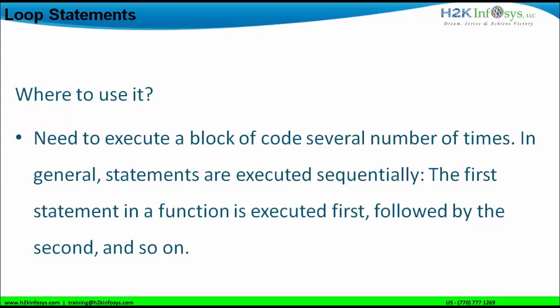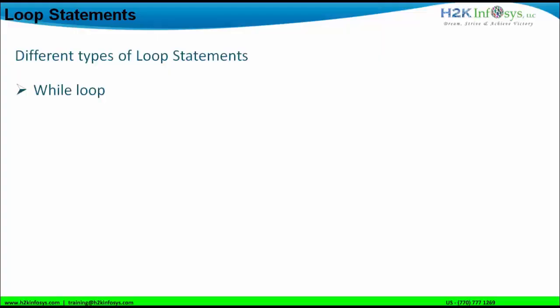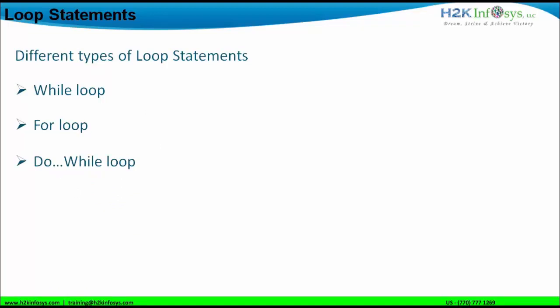In general, statements are executed sequentially. Whatever codes are written as part of your loop statements will be executed sequentially — the first statement will be executed first, followed by the second. The different types of loop statements are the while loop, the for loop, and the do-while loop. We will see each one at a time and look at the differences between them.